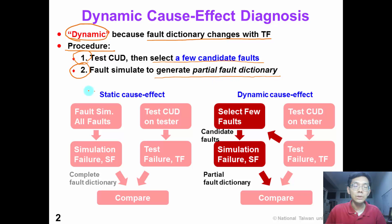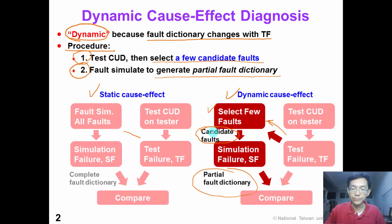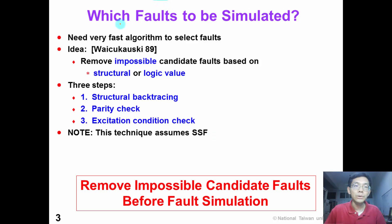The following two pictures show the difference between static and dynamic cause-effect diagnosis. For static cause-effect diagnosis, there is no information exchange between test failure and the fault simulator. However, for dynamic cause-effect diagnosis, we feed the information of test failures and select a small number of candidate faults to simulate, producing a partial fault dictionary. The key issue is: which faults should we select for simulation?